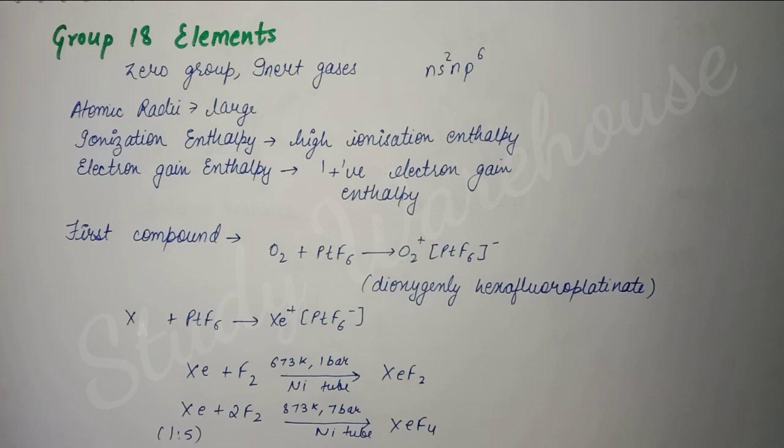Any element reacts when it needs to complete its octet. Their octet is already complete, so they don't react. That's why they are called inert gases or non-reactive gases. They react only under very extreme conditions - only under specific given conditions. It was discovered much later that noble gases also react. They're also called noble gases because they are noble - they do not react. I hope all these things are clear now.